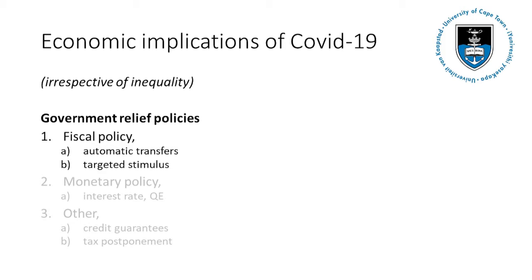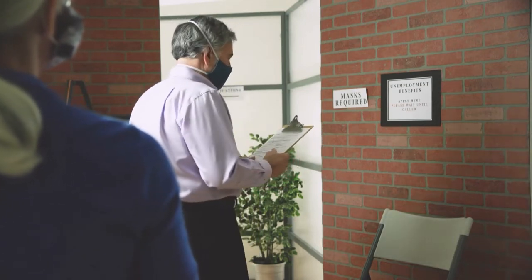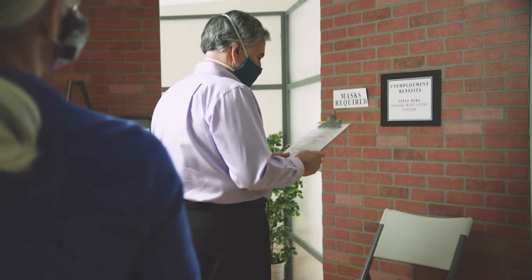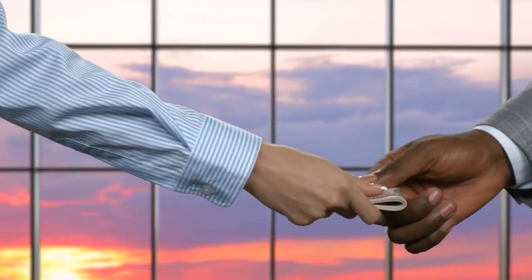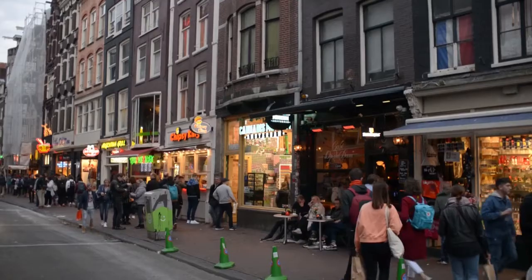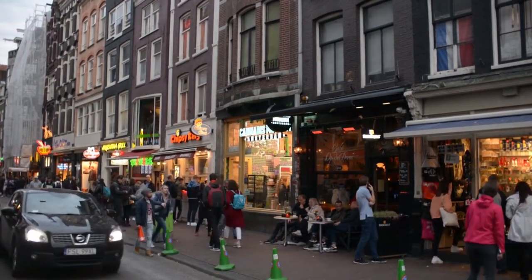Fiscal policy comes in two forms. First, automatic transfers — fiscal policies already in place that activate once the economy hits a recession, such as unemployment benefits, which automatically become more pronounced when more people become unemployed. The second part is targeted stimulus measures specifically designed for this crisis, such as emergency loans for small businesses in the hospitality sector or compensation for businesses that have had to close down.